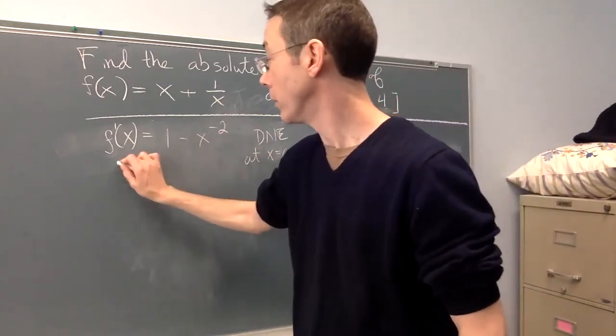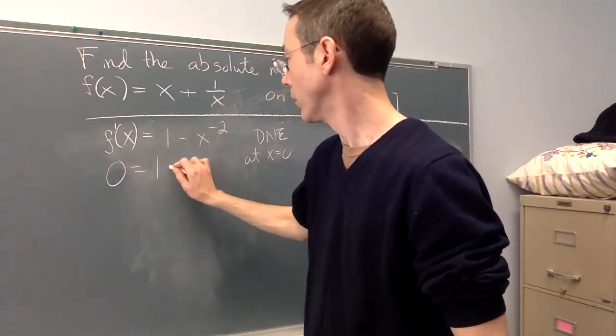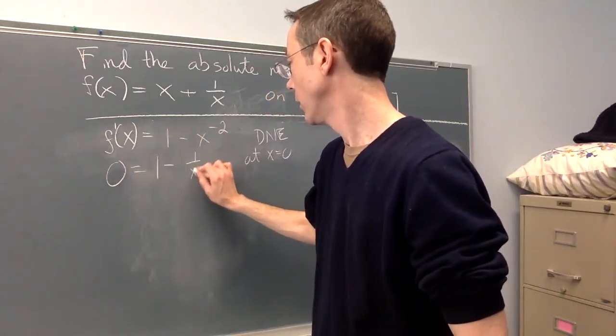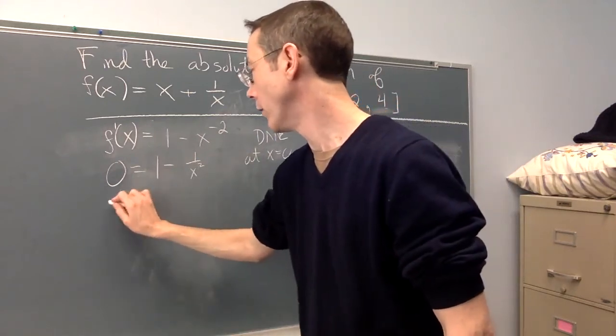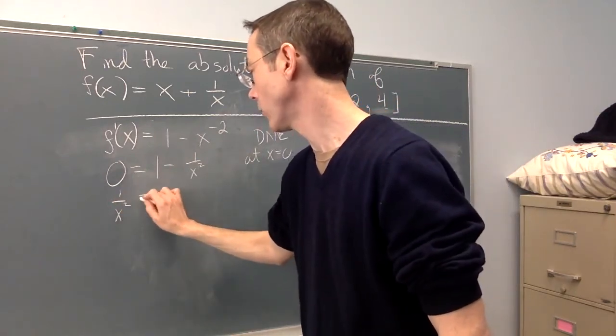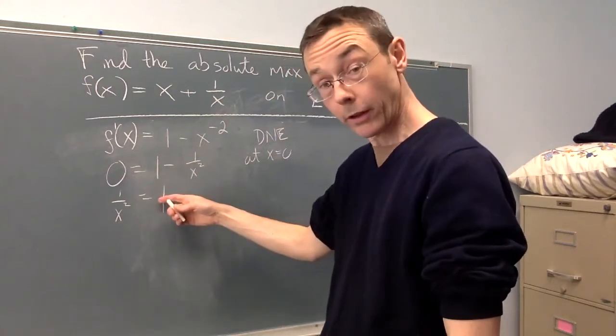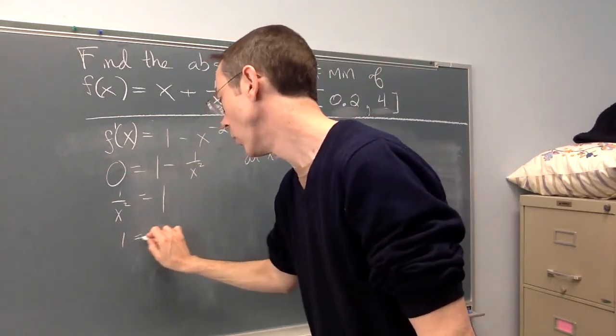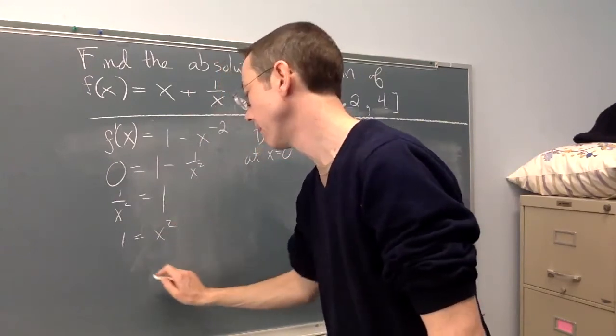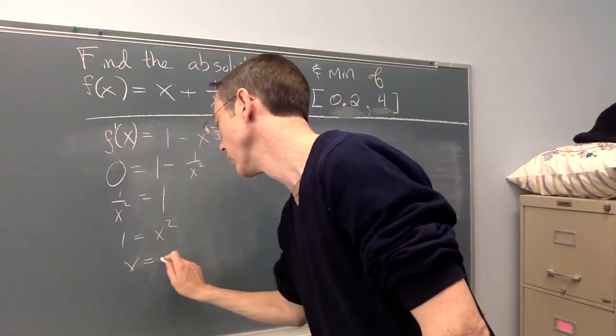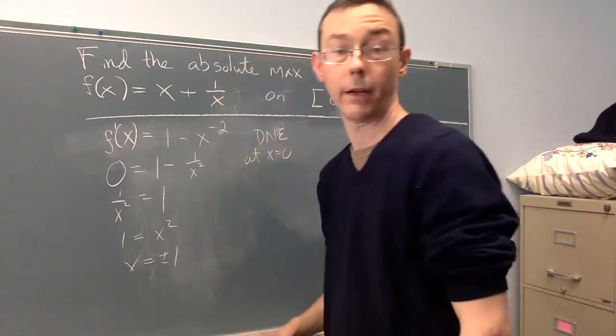Where is this equal to 0? 0 = 1 - 1/x^2. So 1/x^2 = 1, moving this over to the other side. Multiplying both sides by x^2, 1 = x^2, and then taking square roots, x = ±1.